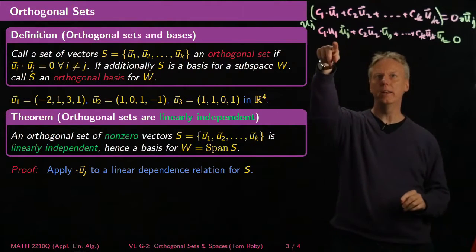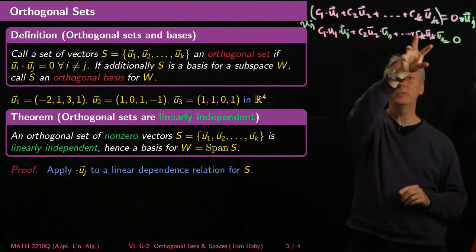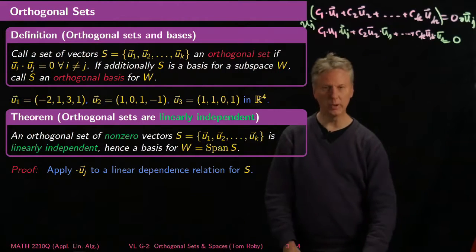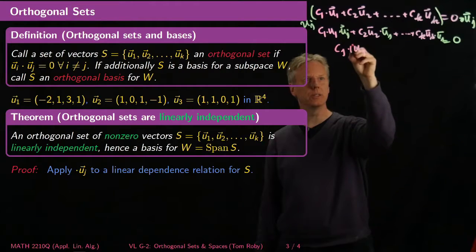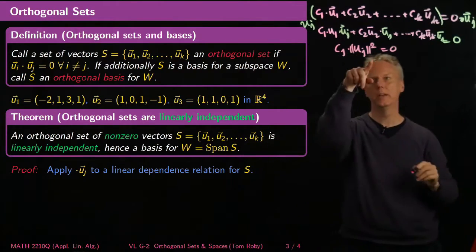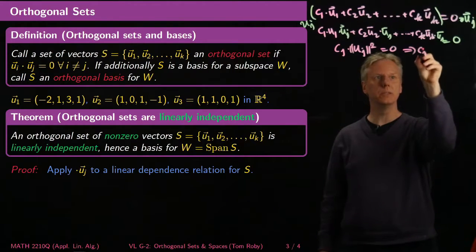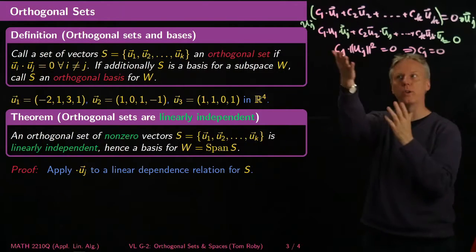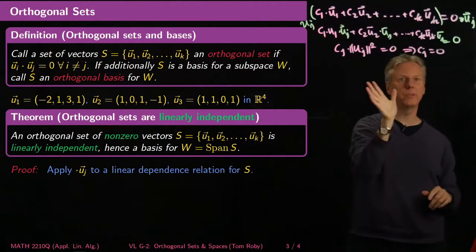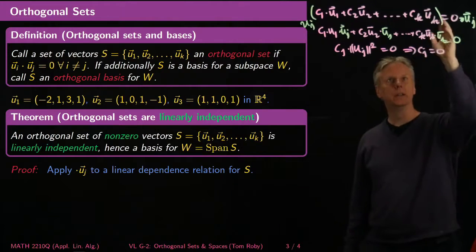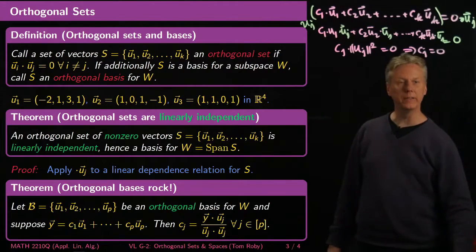By orthogonality, all the dot products ui dot u sub j are zero except when i equals j. So I'm left with c sub j times u sub j dot u sub j, which equals the norm of u sub j squared, and that equals zero. Since u sub j is a non-zero vector, its length squared is non-zero, so c sub j must equal zero. The same proof holds for any j, so step by step we can show all of c1 through ck have to be zero. Therefore the set is linearly independent. This shows you the power of orthogonality — of bringing geometry into the picture.